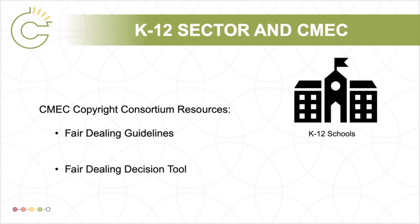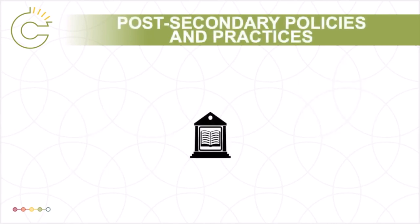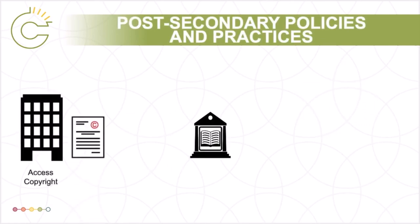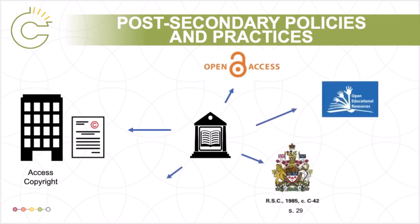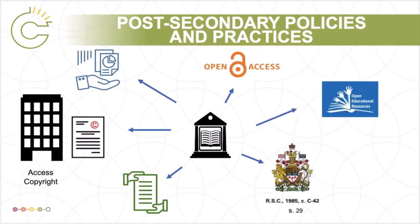Individual school boards may also adopt their own guidelines. Before 2011, post-secondary institutions would almost always have license agreements with Access Copyright or Copybeck to cover routine copying in their institutions. In recent years, this has given way to institutions employing a variety of different approaches to remain copyright-compliant, in part by relying on the Fair Dealing exceptions.